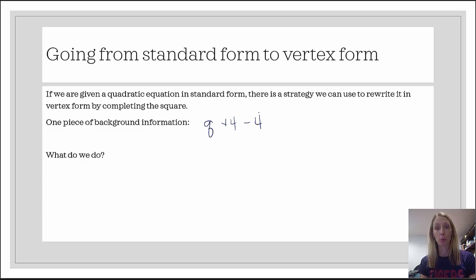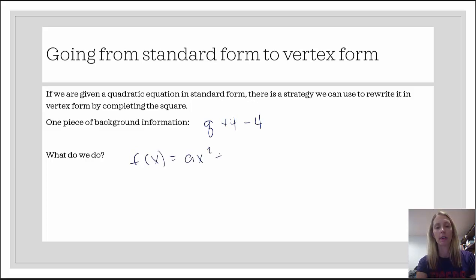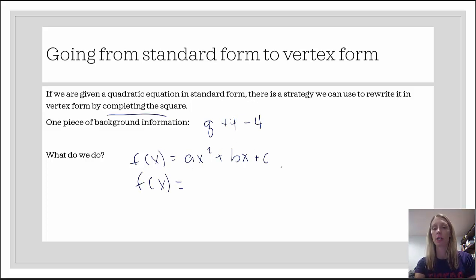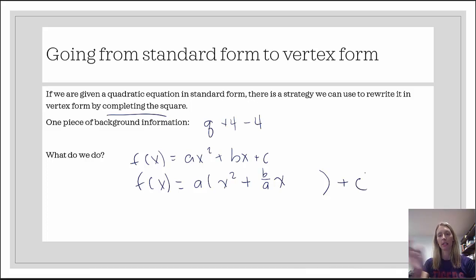We're in standard form: f of x equals ax squared plus bx plus c, and we're going to complete the square. First, factor out a from the ax squared and bx terms, leaving a times the quantity x squared plus b over a times x, with a gap, plus c outside. That x squared plus b over a times x is two-thirds of a perfect square trinomial.